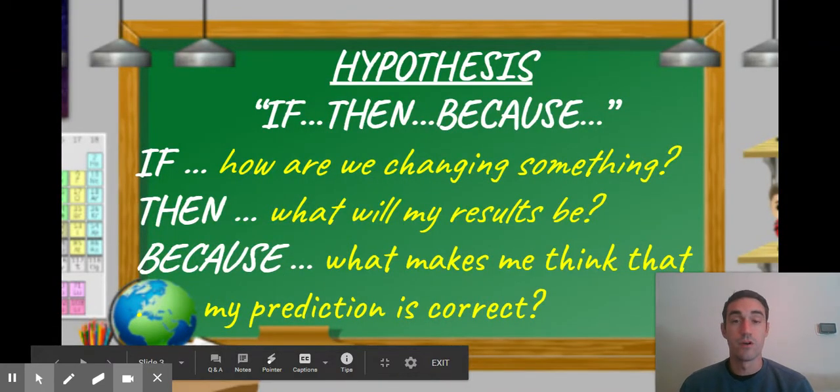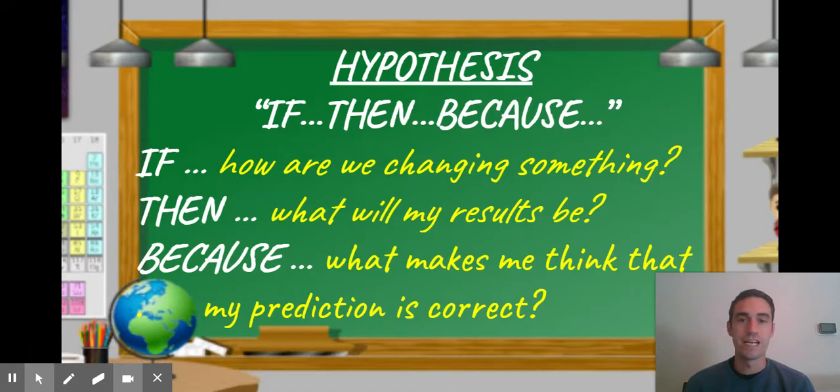The next part of setting up our experiment is the hypothesis. A hypothesis is a prediction or an educated guess about what you think will happen in an experiment once we test it. Your hypothesis doesn't have to wind up being correct, but it should be based on something you already know or research you've done.